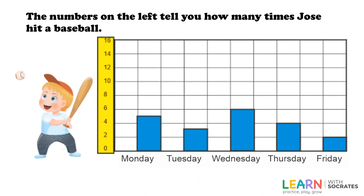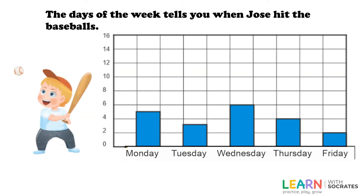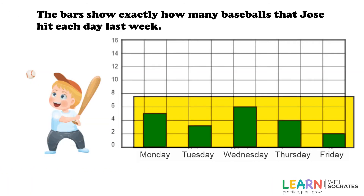The numbers on the left tell you how many times Jose hit a baseball. The days of the week tell you when Jose hit the baseball. The bars show exactly how many baseballs Jose hit each day last week.